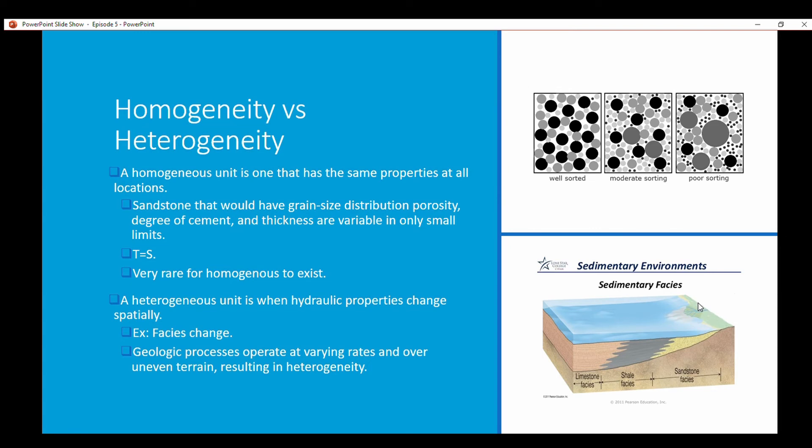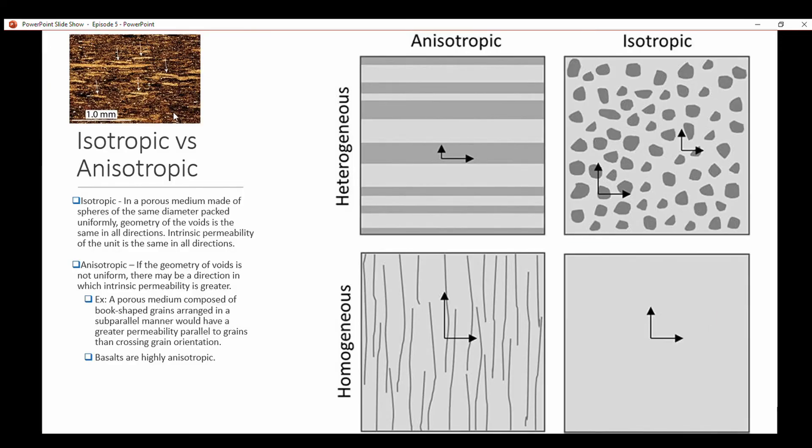Isotropic versus anisotropic. Isotropic: in a porous medium made of spheres of the same diameter packed uniformly, geometry of the voids is the same in all directions. The intrinsic permeability of the unit is the same in all directions. Anisotropic: if the geometry of the voids is not uniform there may be a direction in which intrinsic permeability is greater.